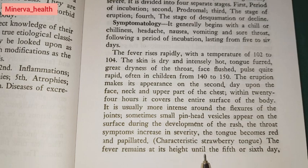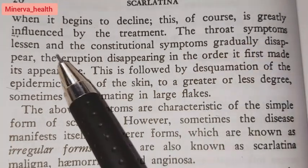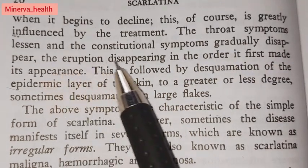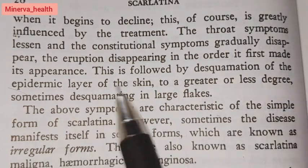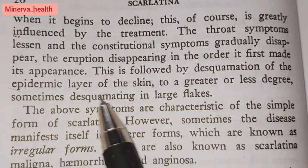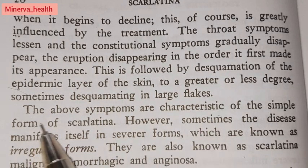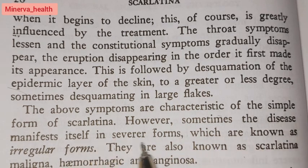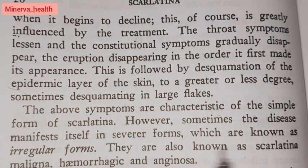The fever remains at its height until the fifth or sixth day, when it begins to decline — greatly influenced by treatment. The throat symptoms lessen and constitutional symptoms gradually disappear. The eruption disappears in the order it first made its appearance, followed by desquamation of the epidermic layer of the skin, sometimes desquamating in large flakes. These symptoms are characteristic of the simple form of scarlatina. However, the disease sometimes manifests in severe irregular forms, known as scarlatina maligna, hemorrhagic, and anginosa.